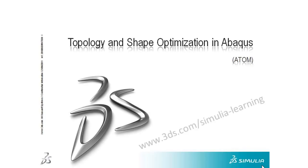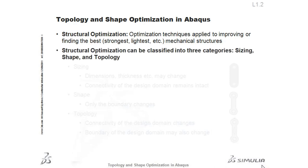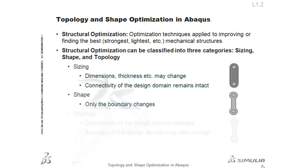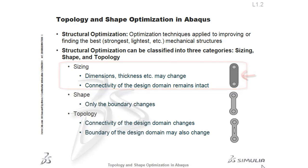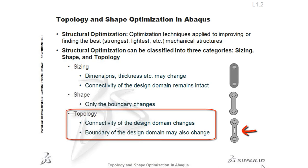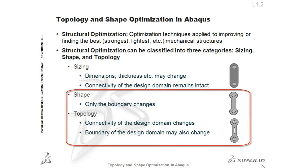Topology and shape optimization in Abaqus can now be performed in the Abaqus Topology Optimization Module, also known as ATOM. Structural optimization is a process of finding the best candidate from a collection of alternatives. It can be classified into three categories: sizing, shape, and topology. In sizing, the connectivity of the design domain remains intact. In shape, only the boundary changes. In topology, both the connectivity and boundary of the design domain may change. ATOM allows for both shape and topology optimization.